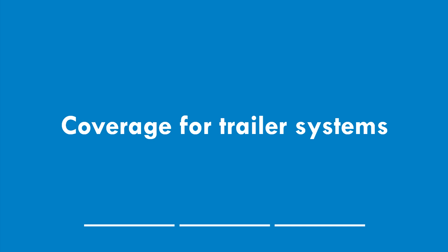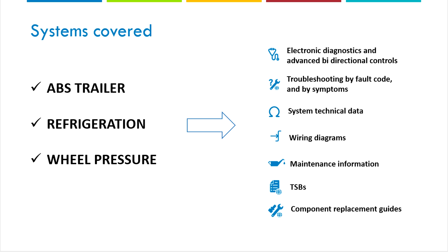Let's take a look at the trailer systems that we will find in Jaltest, which are mainly three: ABS, refrigeration, and wheel pressure. For these systems, Jaltest is going to provide electronic diagnostics together with repair guides for the different fault codes. We'll see shortly within the software how Jaltest will guide and help technicians to go through the repair of active fault codes. It's always important to remember that Jaltest is not just diagnostics — it also provides advanced controls such as parameter settings, calibrations, system checks, and live data monitoring.